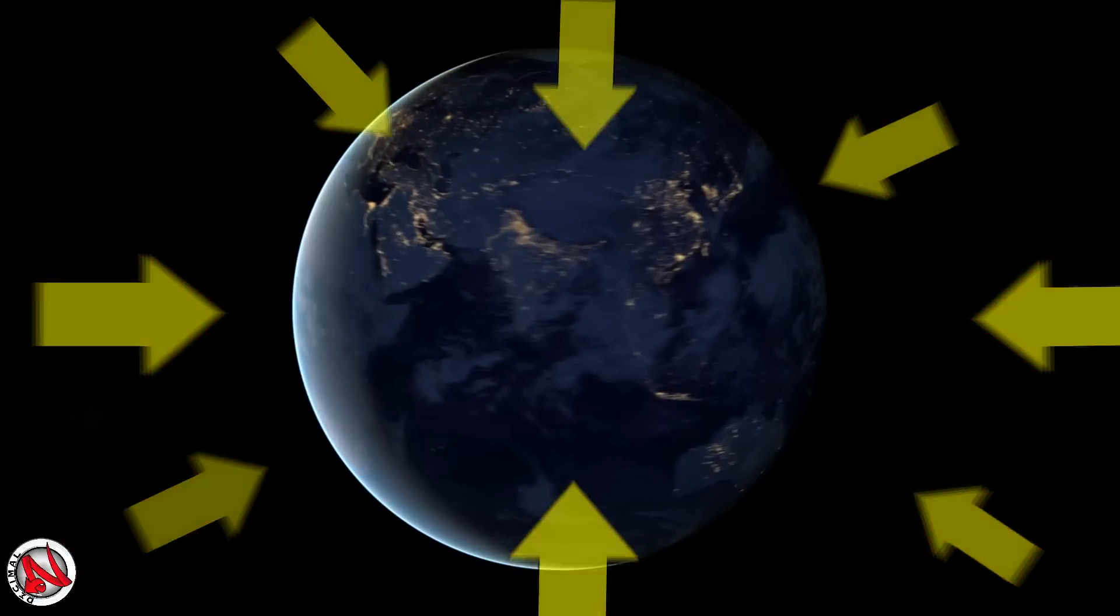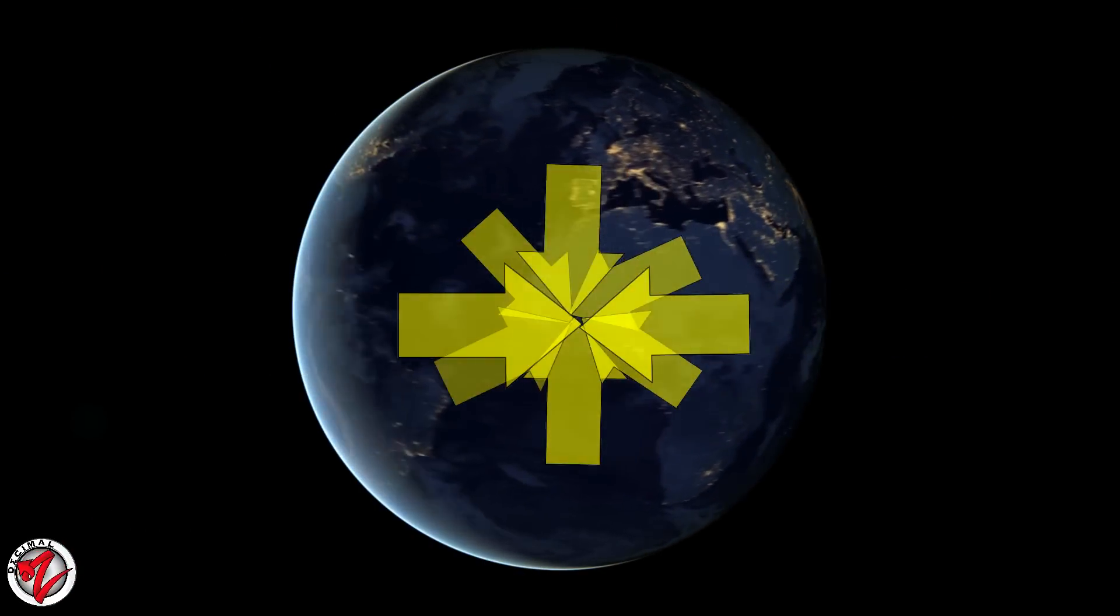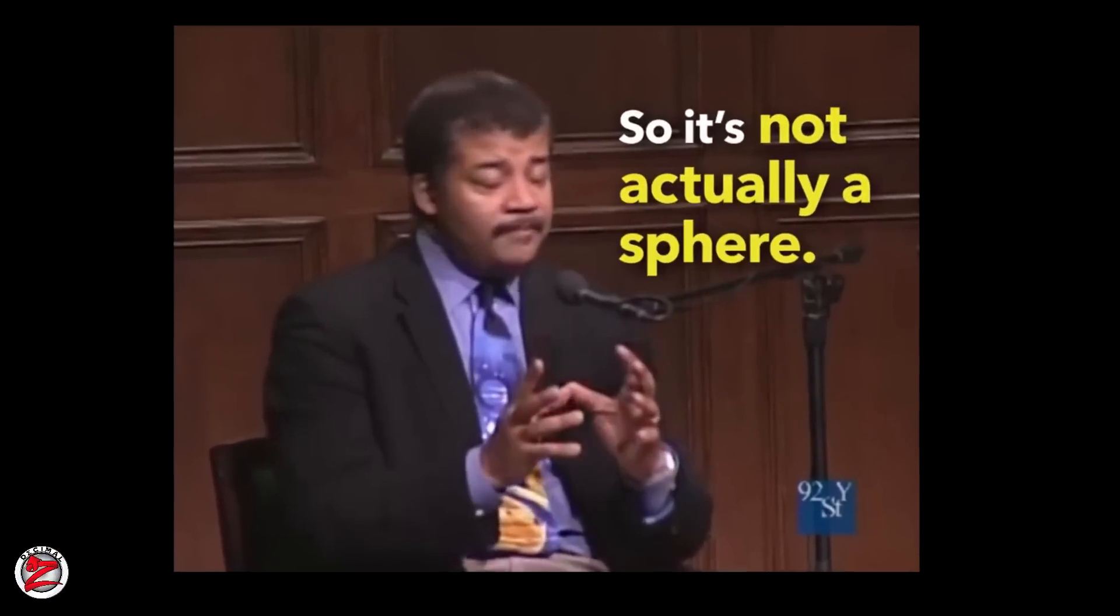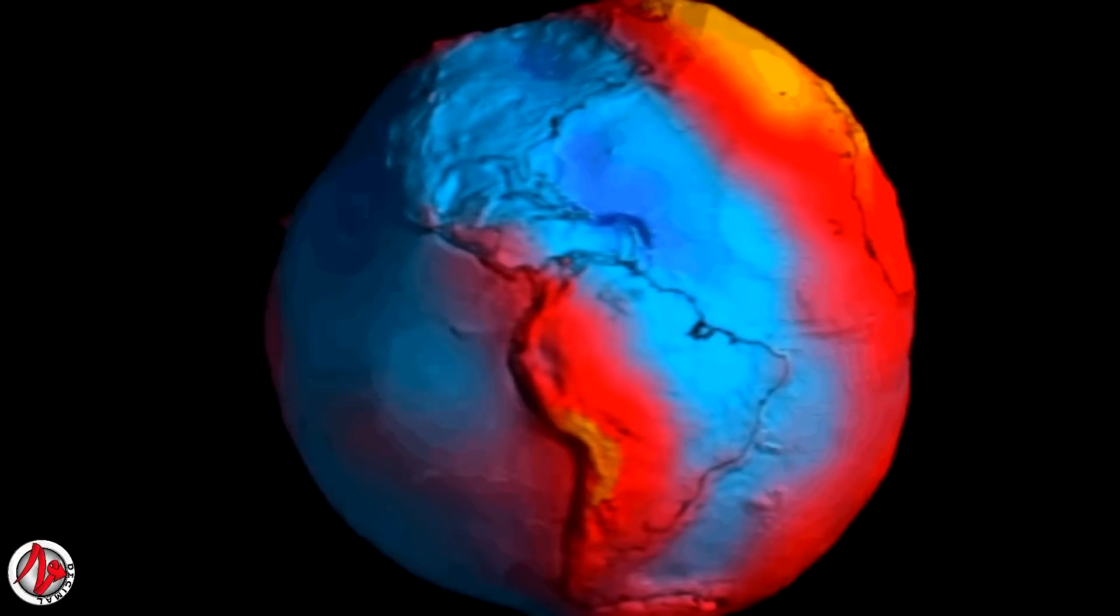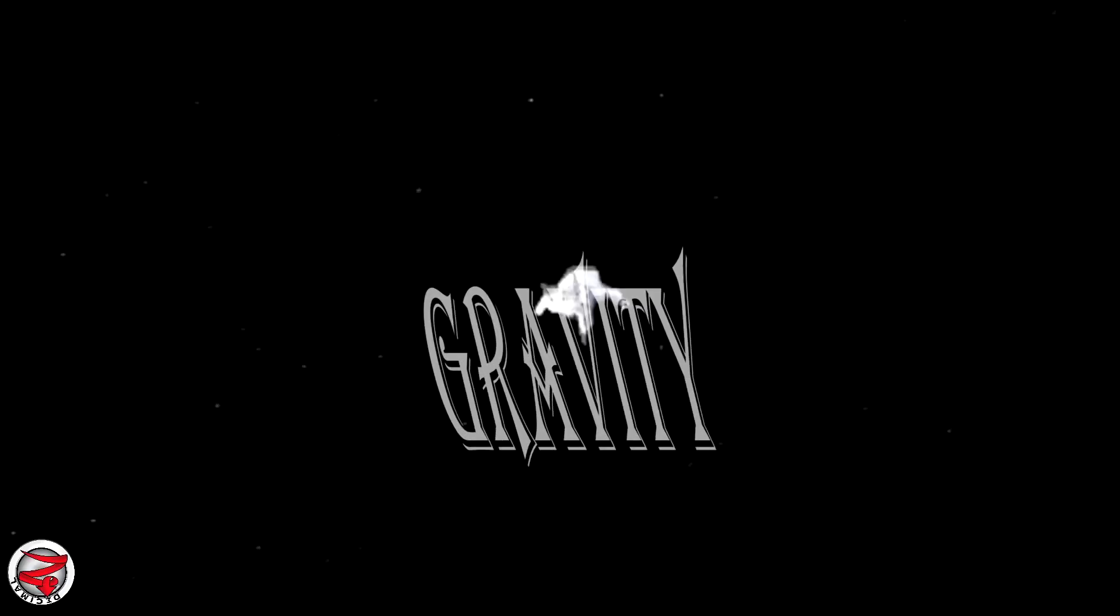They say that gravity pulls everything to the center of the Earth, but then they shoot themselves in the foot when they say that the Earth is not a perfect sphere. It's not actually a sphere, it's oblate, and officially it's an oblate sphere. And today I'm gonna show you what this means, but first, let's talk about gravity.